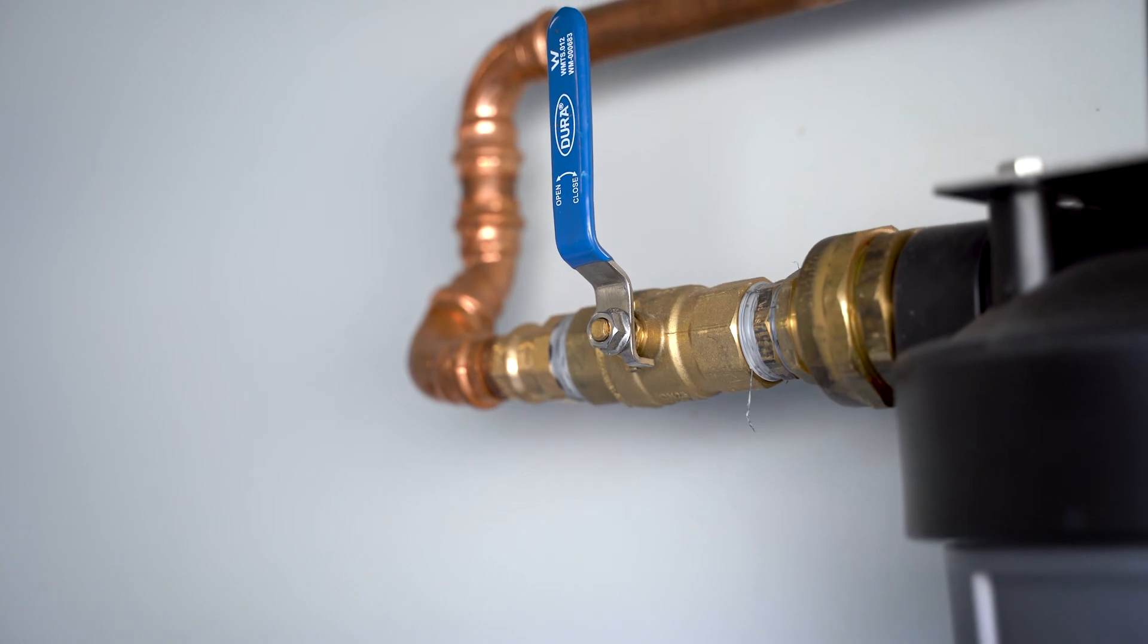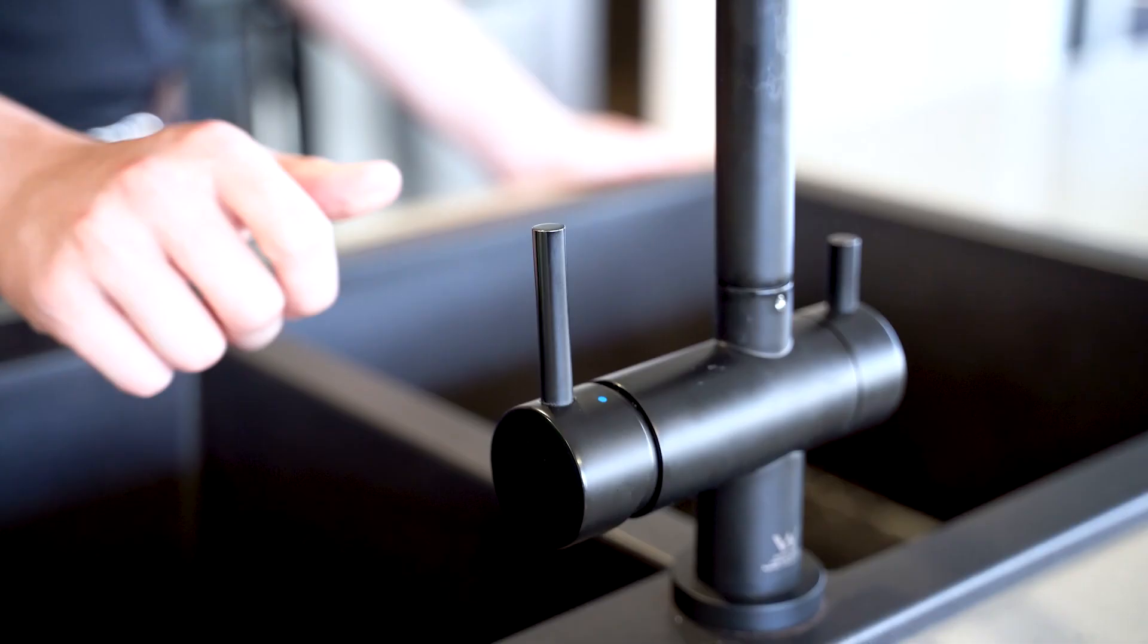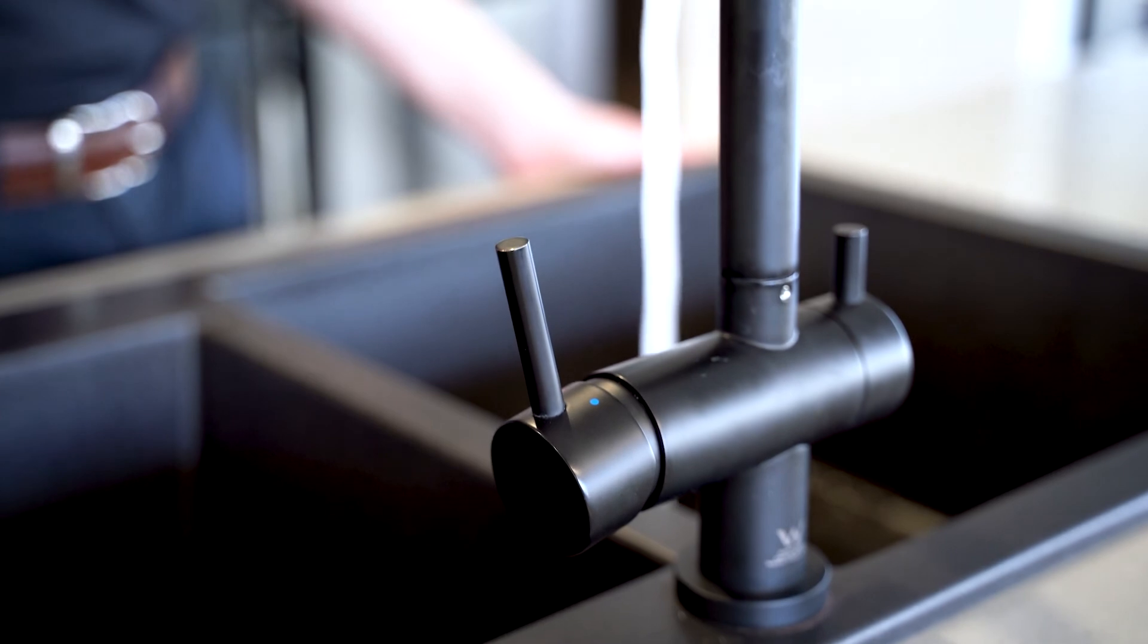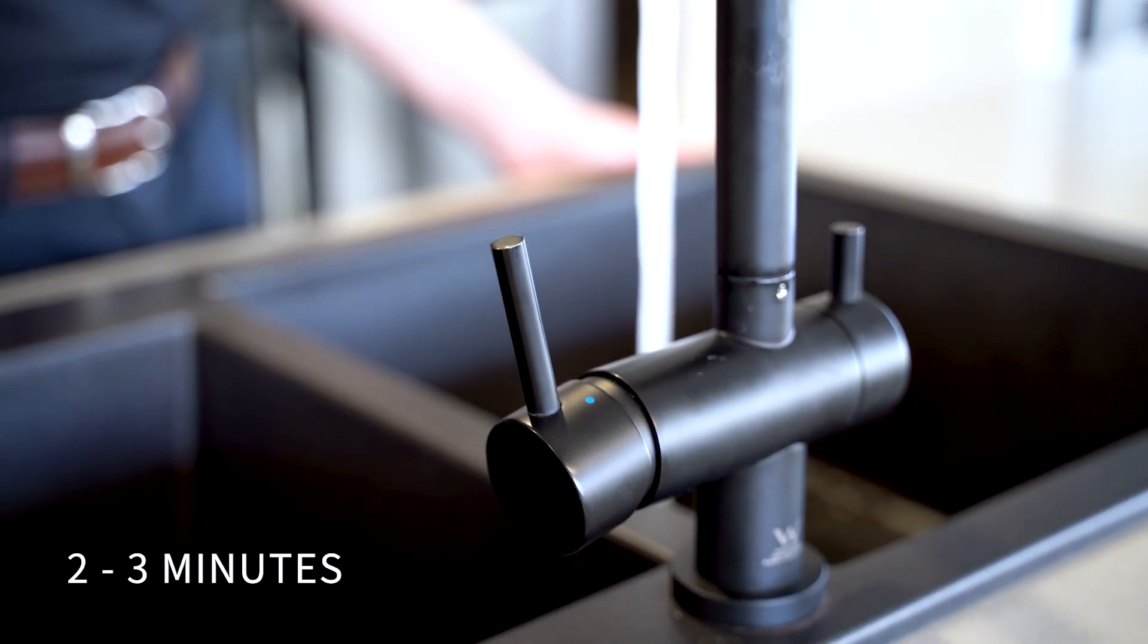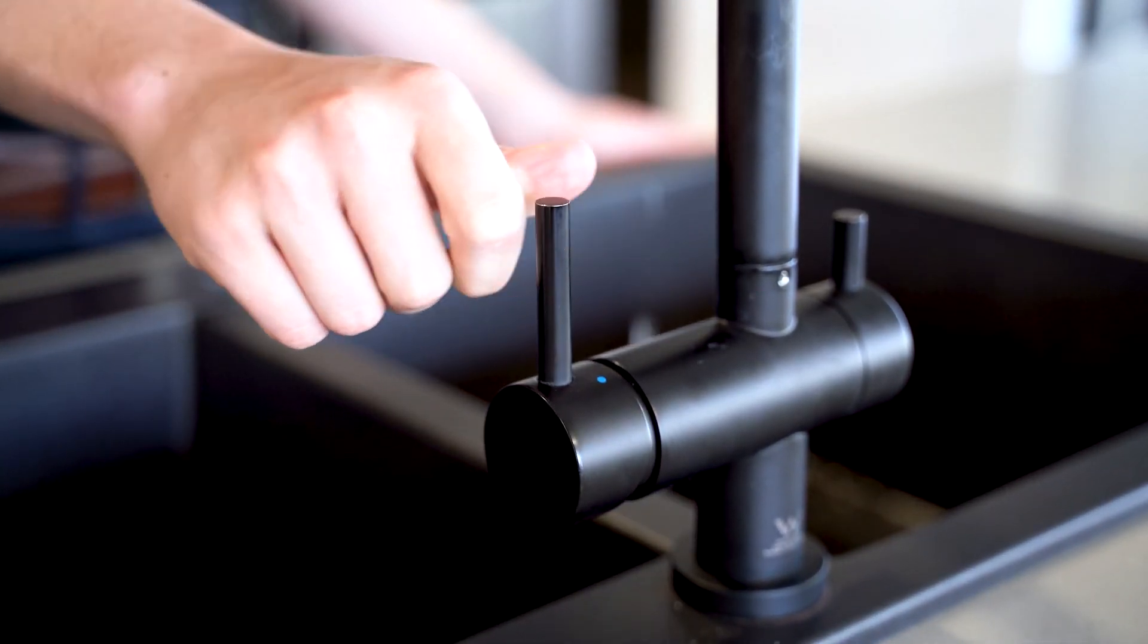Restore the water supply and check the unit for leaks. Turn on a downstream tap and let the water flow through the unit for two to three minutes to release any air and impurities from the system.